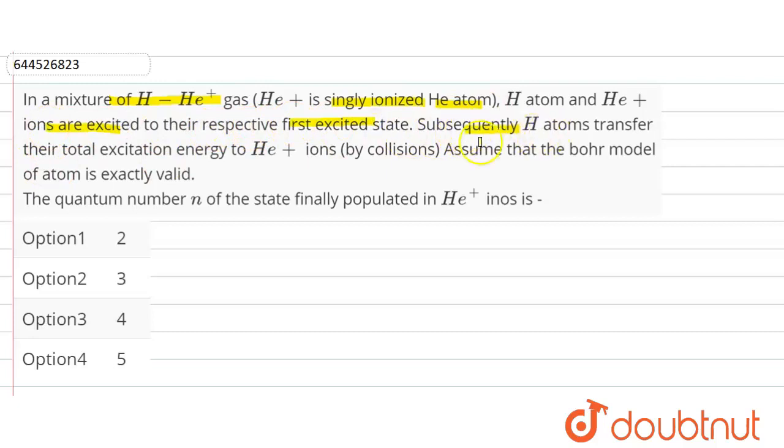Subsequently, H atoms transfer their total excitation energy to He+ ions by collision. Assume that the Bohr model of atom is exactly valid. The quantum number n of the state finally populated in He+ ion will be?